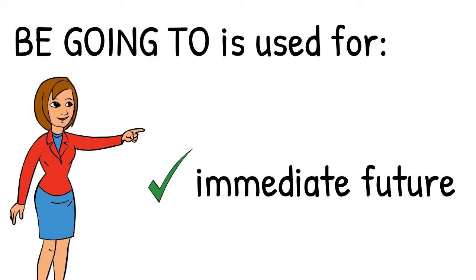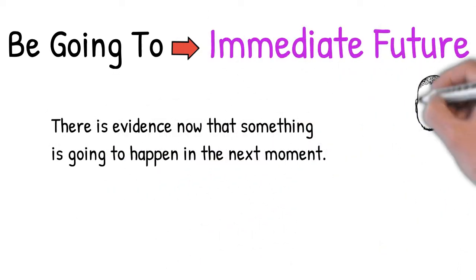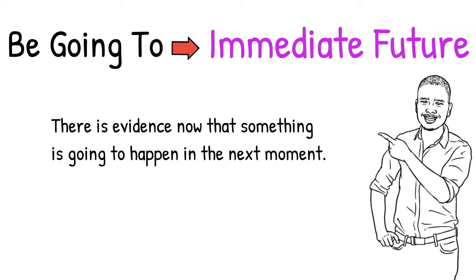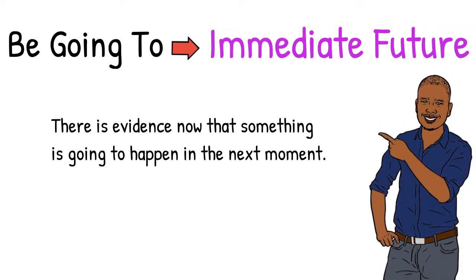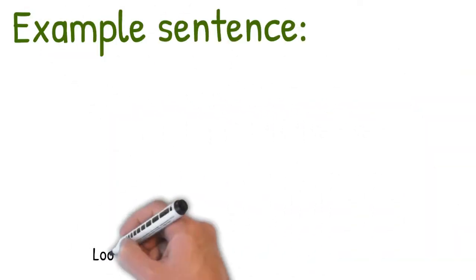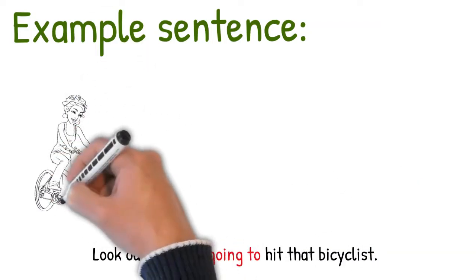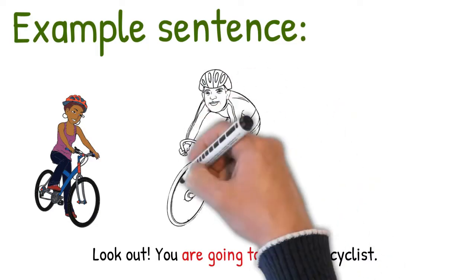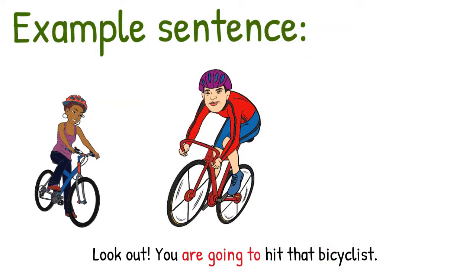Be going to is used for the immediate future. Using be going to for the immediate future, this means there is evidence now that something is going to happen in the next moment. Evidence or proof. So you can make a valid prediction of what's going to happen in the next second. Like in this example sentence. Look out, you're going to hit that cyclist. Or that bicyclist. Look out, you're going to hit that bicyclist. So there's evidence now that he may very well hit her as he speeds through this.